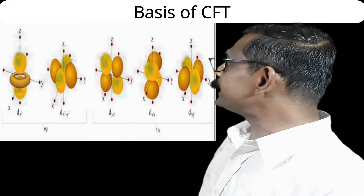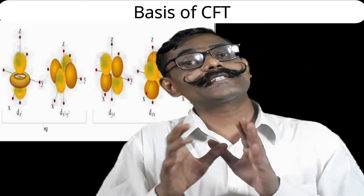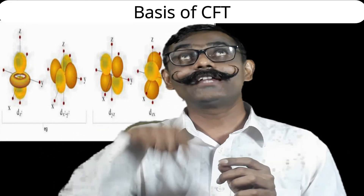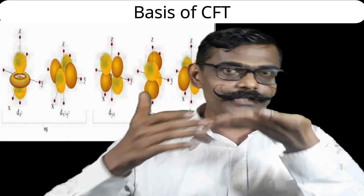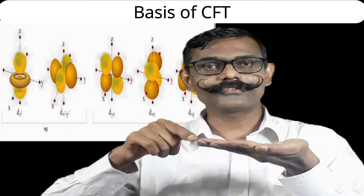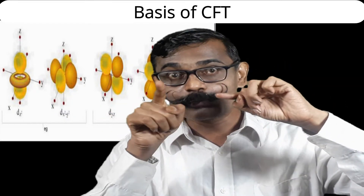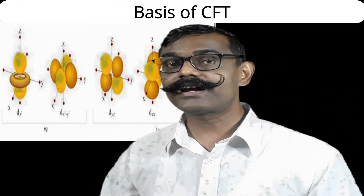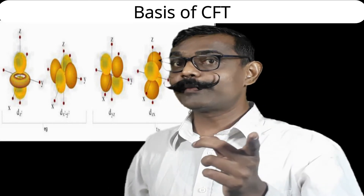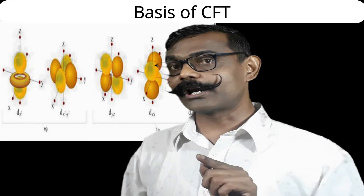The next orbital is dxz. Here also the lobes are in between axes, but the axes are x and z. The x-axis runs left-right and the z-axis up-down. In between x and z there will be a lobe, making a 45-degree angle to both axes. The yz orbital is in the y-z plane; the xz orbital is in the x-z plane.